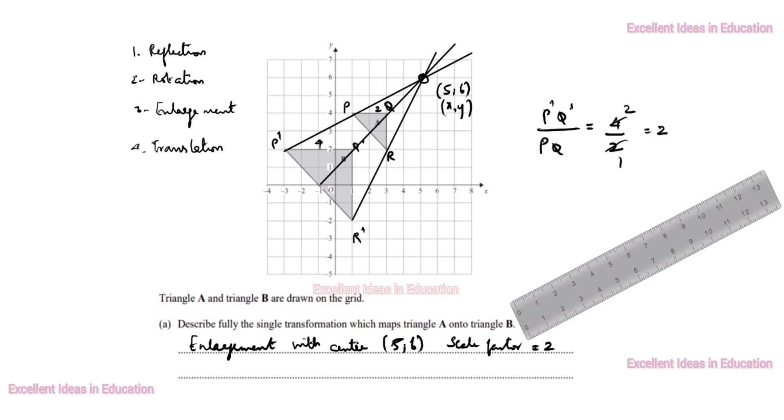This is the answer. So, image size doubles the size of the original triangle. You see triangle A onto triangle B. So, if this is triangle B to triangle A, it comes 2 divided by 4. Scale factor is half. This one carefully see in your exam.